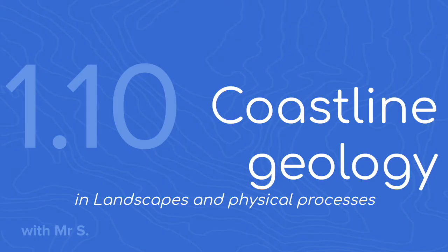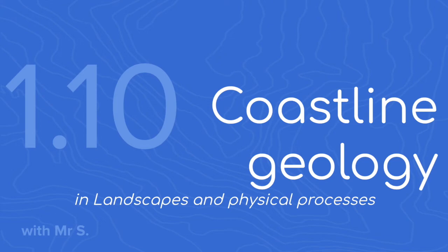The geology of the coastal area can affect the types of landforms which develop there, and there are two major geological structures of coastline that we're going to look at today: Concordant and Discordant. So let's find out what those two words actually mean.